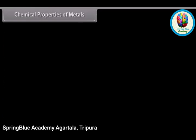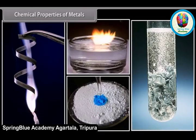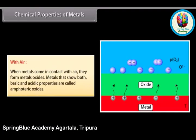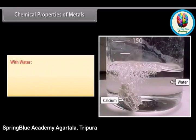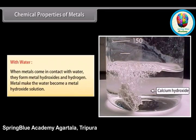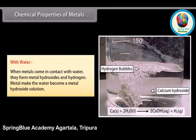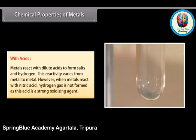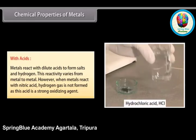Chemical properties of metals. Let us look at some chemical properties of metals. These properties include reactions of metals with other elements — that is, air, water, acids, and other metal salts. With air: when metals come in contact with air, they form metal oxides. Some metals show both basic and acidic properties and are called amphoteric oxides. With water: when metals come in contact with water, they form metal hydroxides and hydrogen. With acids: metals react with dilute acids to form salts and hydrogen, and this reactivity varies from metal to metal.